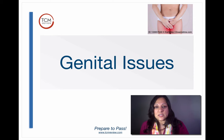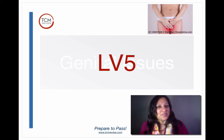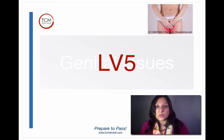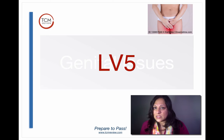Next, genital issues — Liver 5. Liver 5 is a Luo channel point. Luo channels are great because they drain excess from the channel. The Luo channel of Liver 5 circles the genitals, so Liver 5 is a great point for any kind of itching, swelling, or cold that affects the genitals — leading to shrinking vagina or even shrinking scrotum.